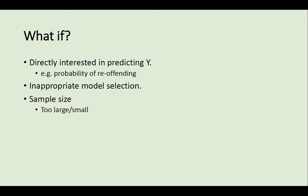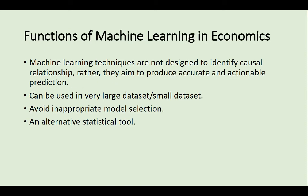Machine learning algorithms can control for confounders or discover treatment effect heterogeneities. The functions of machine learning in economics: machine learning techniques are not designed to identify causal relationships. Rather, they aim to produce accurate and actionable predictions. They can be used in very large or very small data sets, can avoid inappropriate model selection, and give us alternative statistical tools.